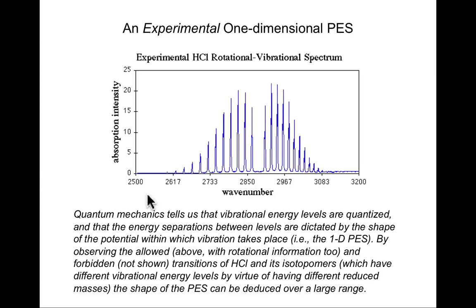I gave you some insight into how experimentalists go about defining regions of a potential energy surface. For example, for a bond stretching coordinate, that would be movement along one internal coordinate dimension. You can use information from infrared spectroscopy in order to assign energy levels.